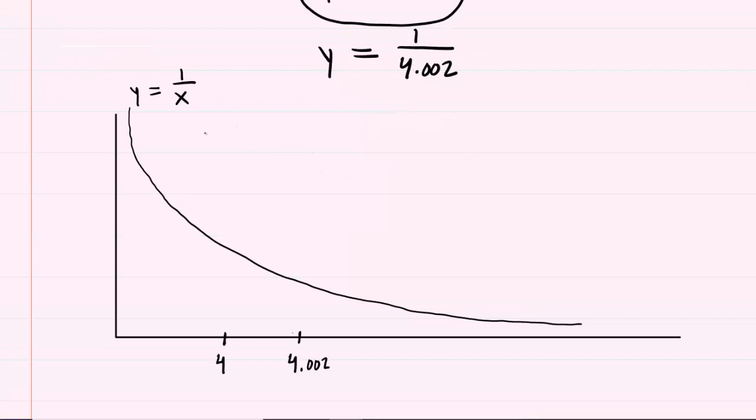So here we have a rather crude sketch of the graph y equals 1 over x. Please notice that this is certainly not drawn to scale. This scale has been exaggerated to illustrate our points as we go through the problem.